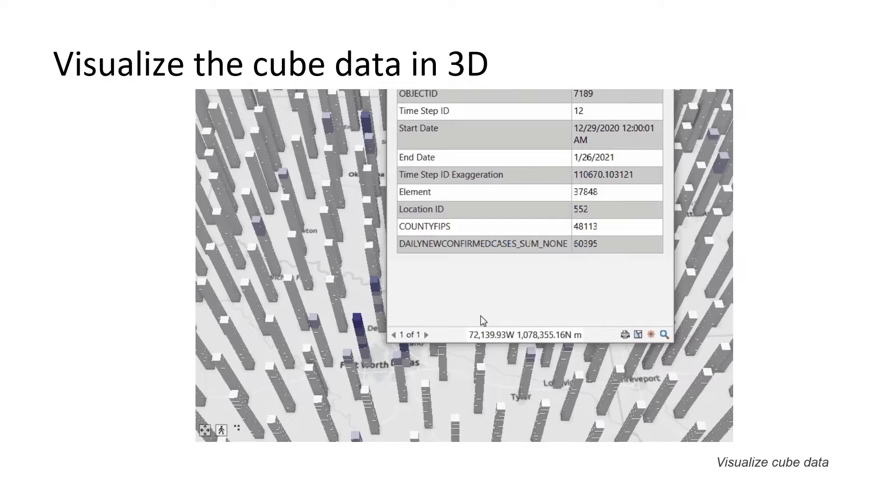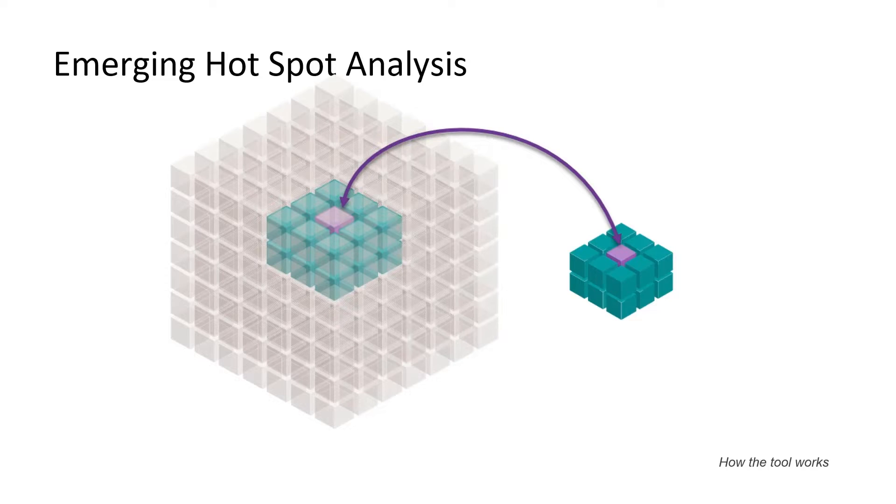In this part of the workshop, we're going to be focusing on the emerging hotspot analysis tool, but first, let's take a look at how the tool works. The Emerging Hotspot Analysis Tool visits each bin in the spacetime cube and it looks at its value and the values of the bins around it, both its spatial neighbors and its temporal neighbors.